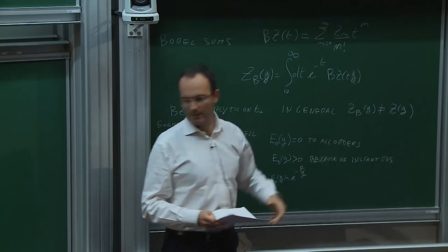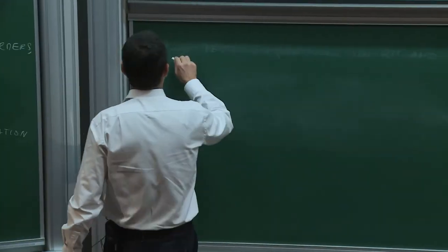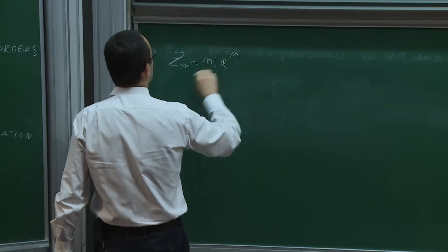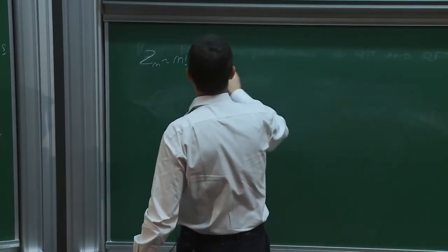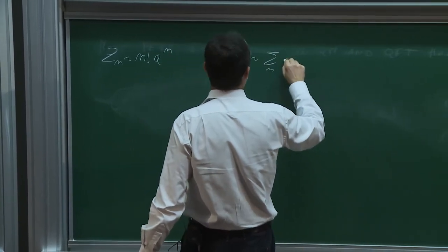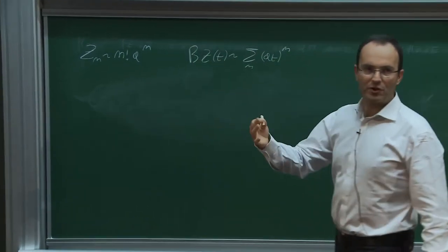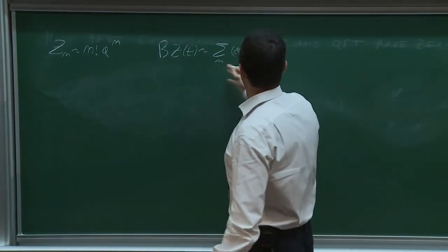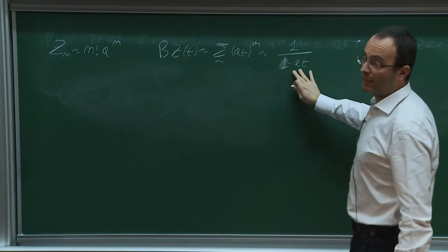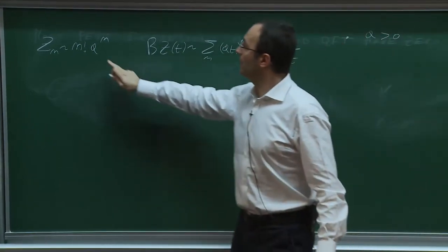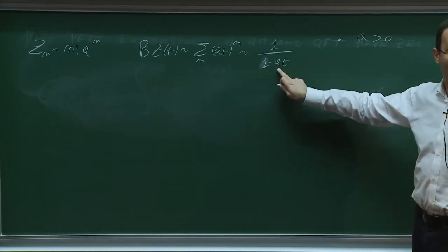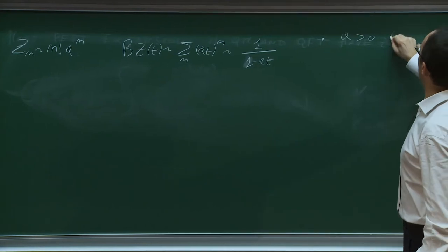The simplest thing is to consider a theory with the generic factorial growth: Zₙ ~ n! · aⁿ. If I compute B_Z(t), the n! is removed by hand, so roughly B_Z(t) ~ Σ(at)ⁿ ~ 1/(1−at). There are two situations depending on the sign of a. If a>0 — a same-sign series — there is a singularity at t = 1/a on the positive real axis, which indicates immediately that Borel summability fails.